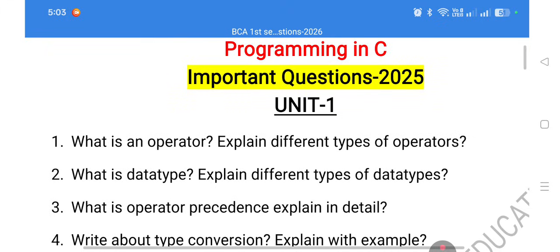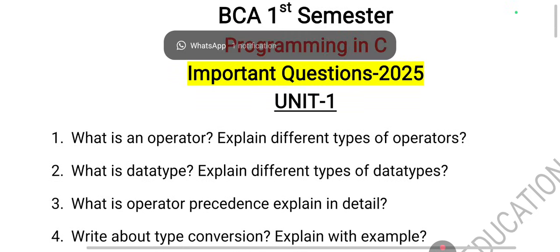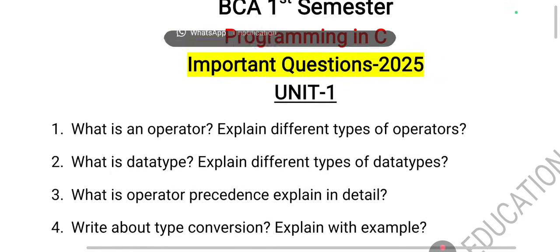Operator precedence is used when evaluating mathematical expressions. It determines which operator gets highest preference, and whether associativity is left-to-right or right-to-left. Not all operators have the same precedence, so you must understand these distinctions.